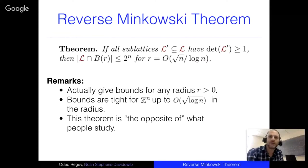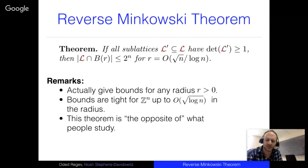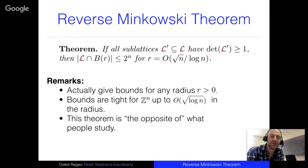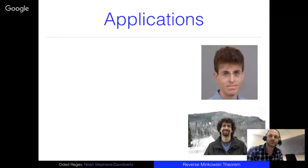This theorem is kind of the opposite of what people typically study in sphere packing. A good lattice sphere packing has low determinant but very few points in a small ball. We're interested in the opposite: how bad a lattice sphere packing can be. Morally, if formulated properly, the answer should be Z^n — it's the worst lattice sphere packing. I'll say more about that later.